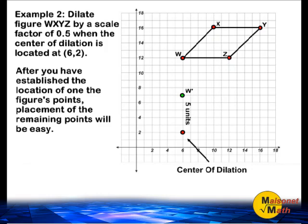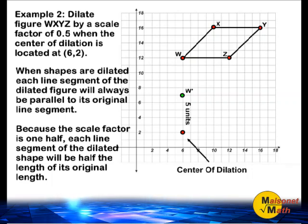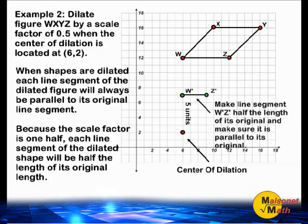After you have established the location of one of the figure's points, the placement of the remaining points will be easy. Because the scale factor is 1 half, each line segment of the dilated shape will be half the length of its original length. For example, examining line segment WZ of our original object, point Z is 6 units directly to the right of point W. So for our dilated shape, point Z must be half of that distance — 3 units — directly to the right of dilated point W.